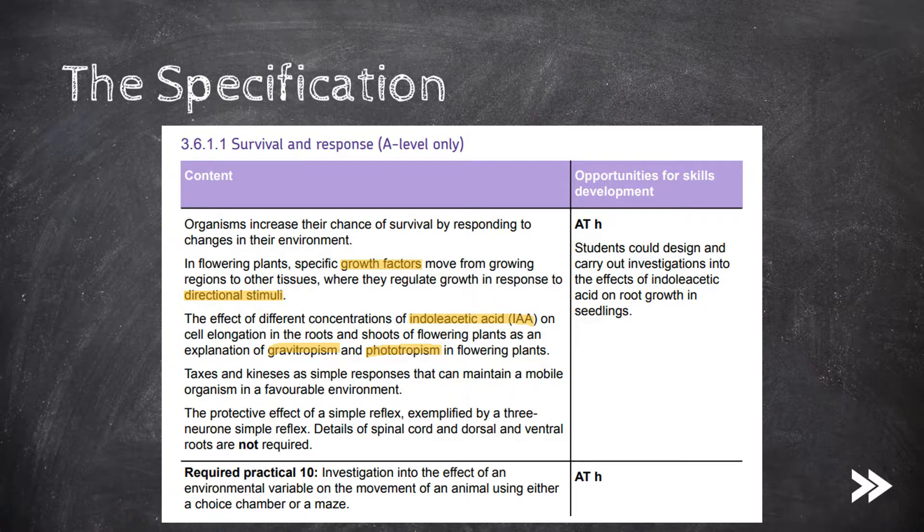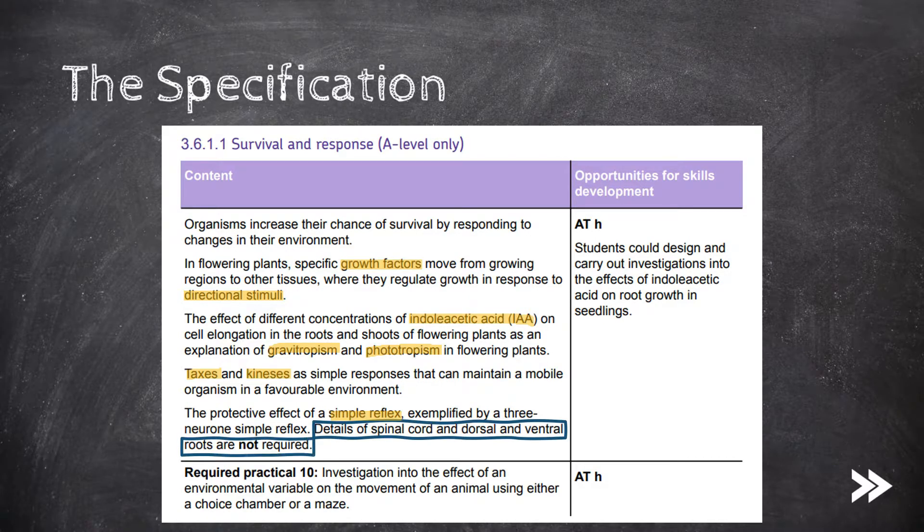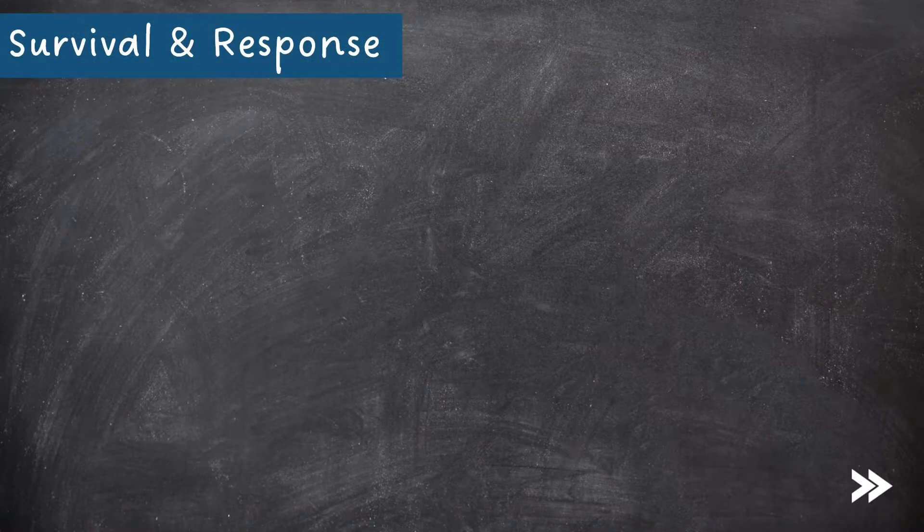We should also know about taxis and kineses, and how they maintain mobile organisms in a favourable environment. Finally, we should know about simple reflexes, exemplified by the three neurons simple reflexes, and how they are useful in protecting organisms. Note that you do not have to know details of the spinal cord and dorsal and ventral roots. So, let's make a start.